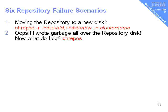Next, I did something rather more dangerous. I accidentally DD'd into the repository disk a whole set of blanks — absolute garbage over the repository. There's no way you can get out of that data. So what do you do? Well, you just use the change repository command.